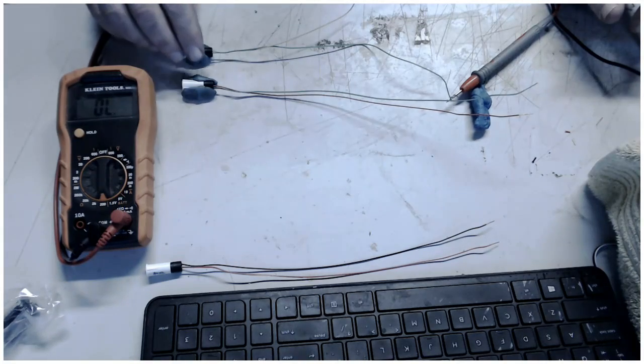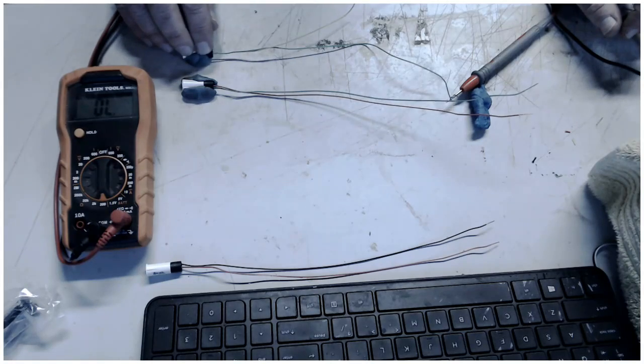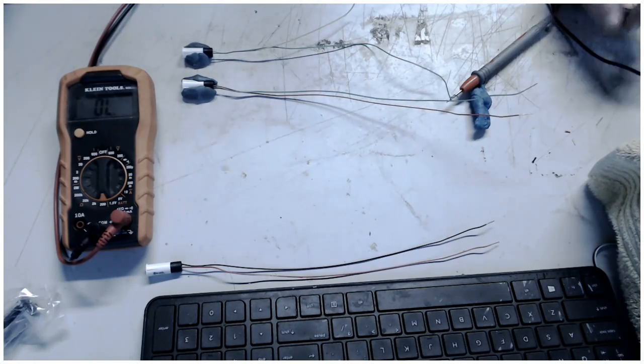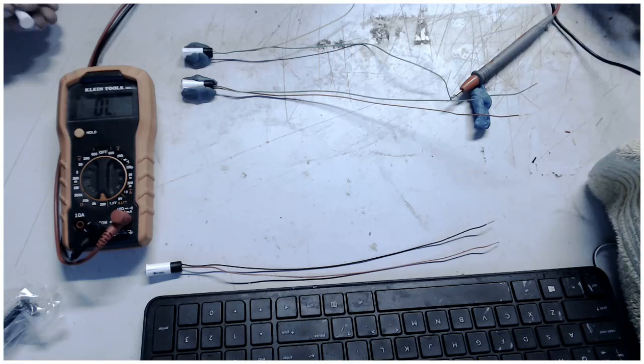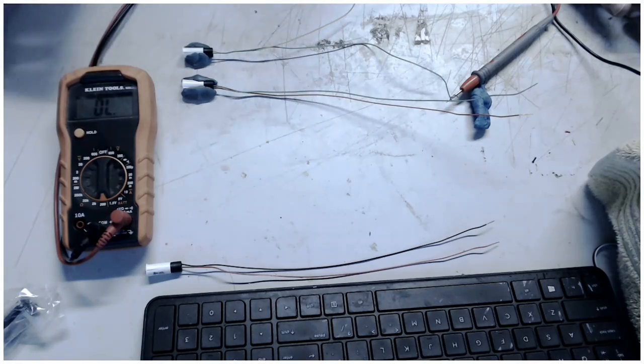So now these are normally closed 1125 central contacts so that when you put a magnet, if you watch the meter, when I put a magnet to it, the contact closes. When I open it, it opens up.